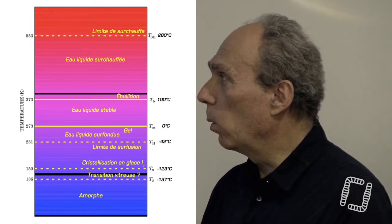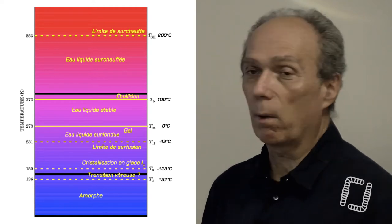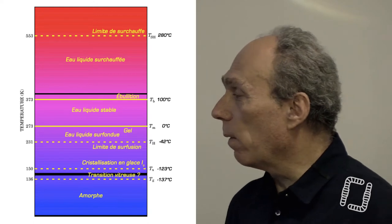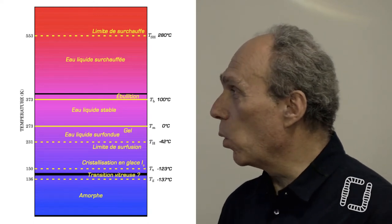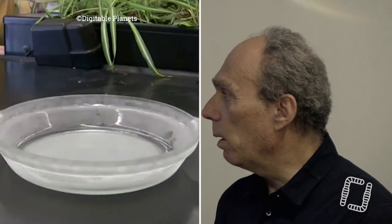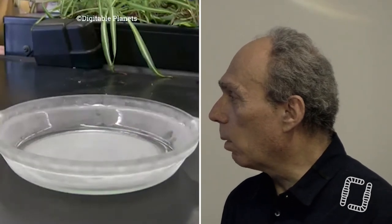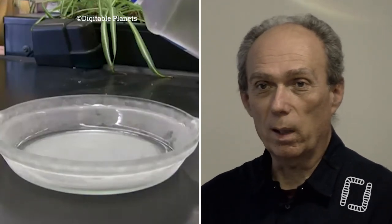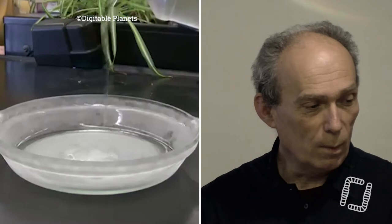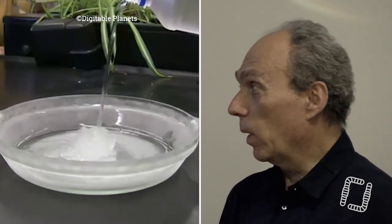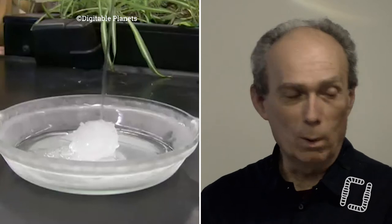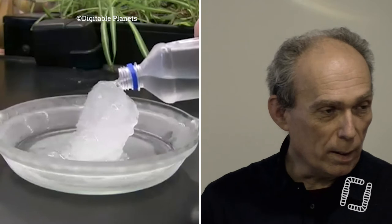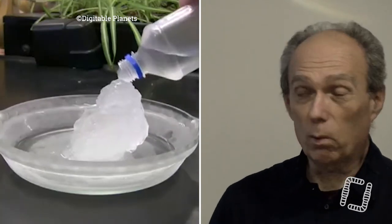De même, on peut avoir une eau qui reste liquide jusqu'à 280 degrés Celsius, et on peut la passer directement à l'état vapeur en mettant un objet dedans. Vous voyez ici de l'eau liquide qu'on refroidit : quand on la verse, elle se transforme en glace, parce qu'elle est à moins 42. Pourquoi n'avait-elle pas gelé dans le récipient ? C'est une propriété de l'eau — elle a cet état surfondu, elle peut rester liquide bien en dessous de son point de fusion.